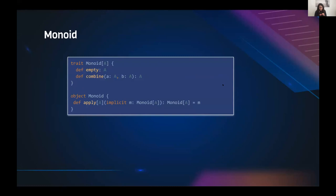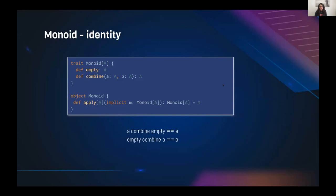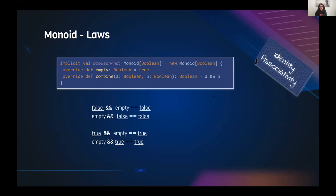Monoid has 'combine' like semi-group, but also requires an 'empty' element. If we think our data type can form a monoid, we need to check whether an empty element is possible for that type. We must also verify the laws: identity and associativity. For the identity law, combining 'a' with 'empty' should equal 'a', and combining 'empty' with 'a' should also equal 'a'.